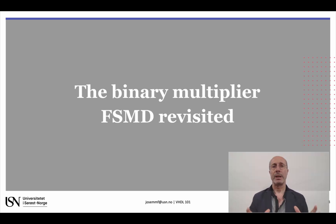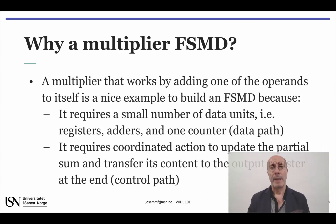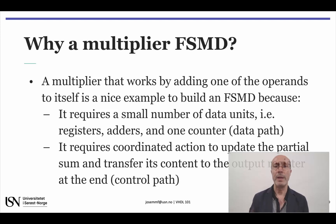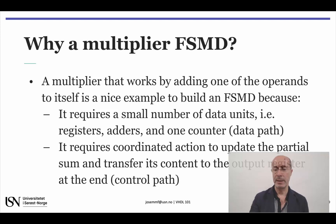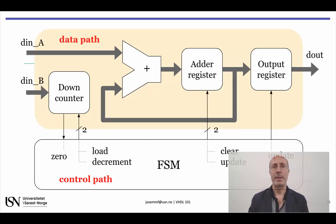Having these concepts fresh in our minds, let's revisit the binary multiplier FSMD to see how they apply in practice. Binary multiplication offers an interesting example for an FSMD if we decide to perform it by adding one of the operands to itself as many times as indicated by the other operand. This algorithm requires a small number of data units comprising data registers, an adder, and one counter. These elements make up the data path architecture and their operation will be coordinated by the finite state machine in the control path. This slide repeats the FSMD architecture shown in the preceding presentation.